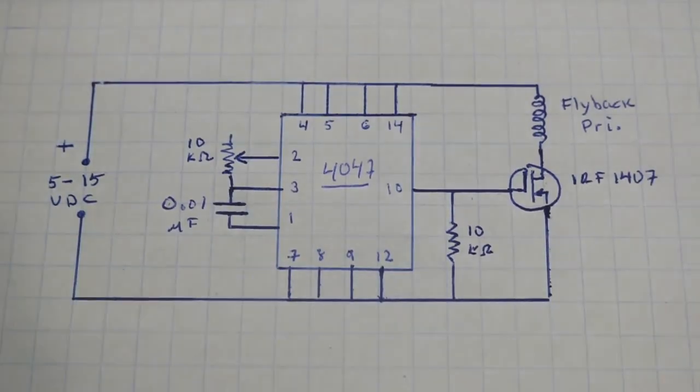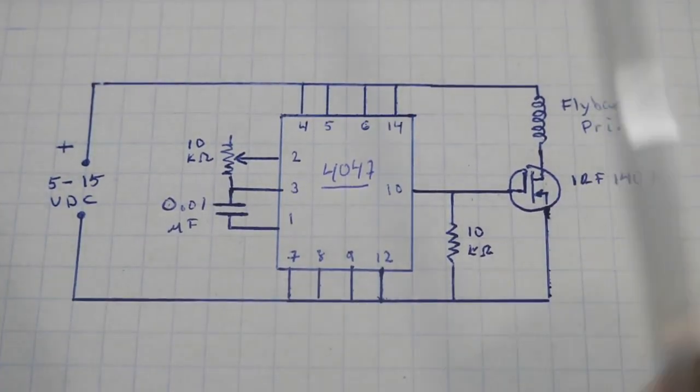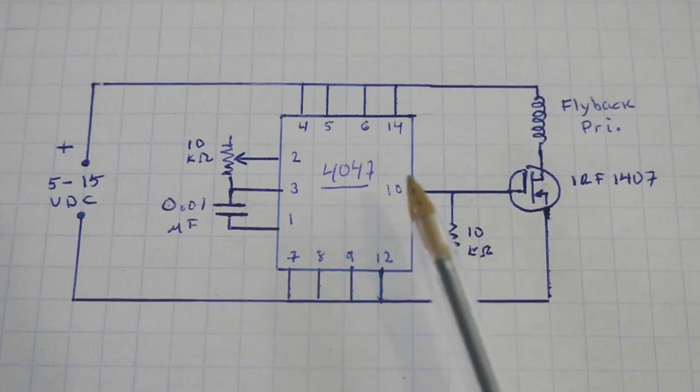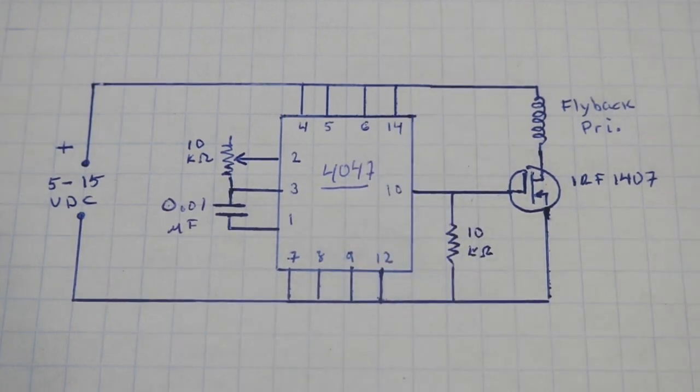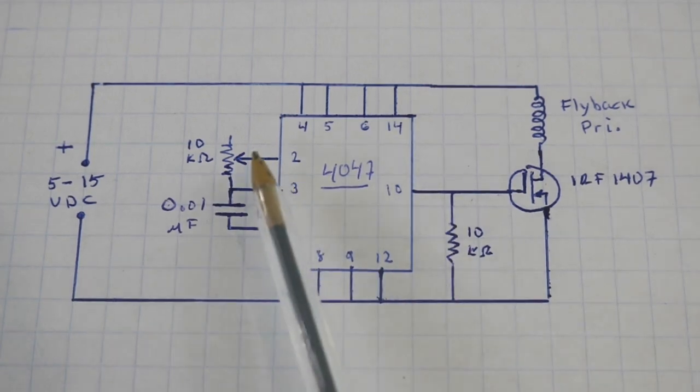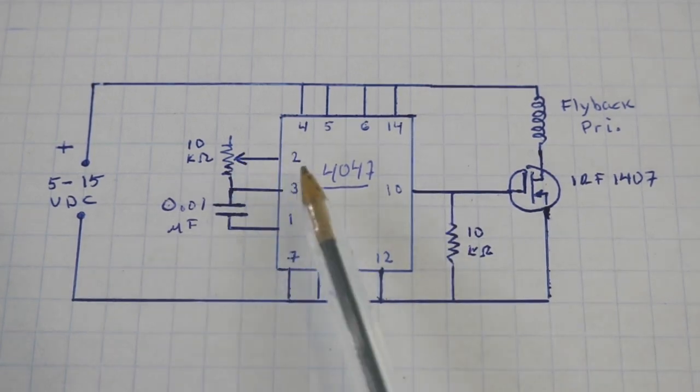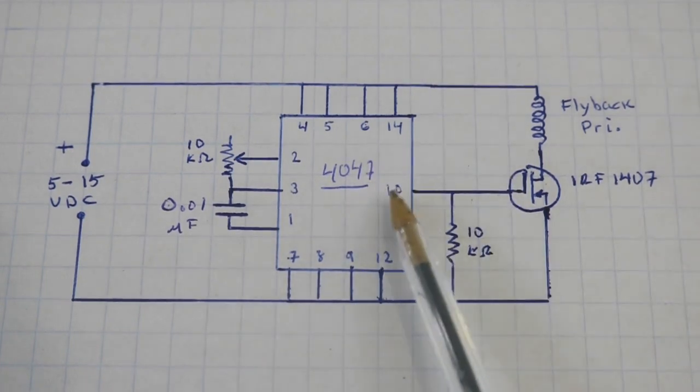The circuit is based on the CD4047 IC, which produces the train of rectangular pulses. Here we have a potentiometer to fine-tune the output frequency, which is on pin 10.